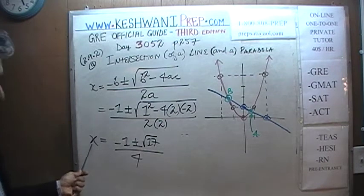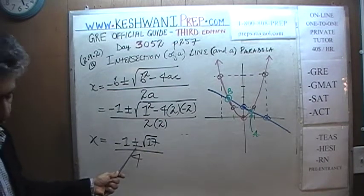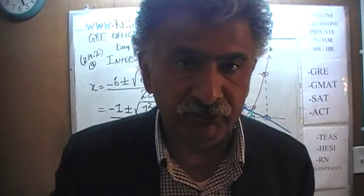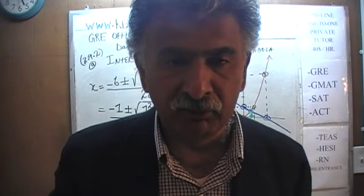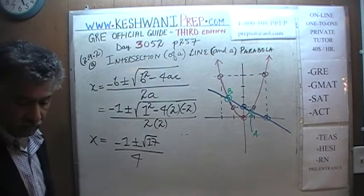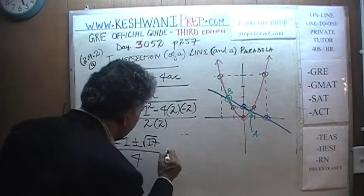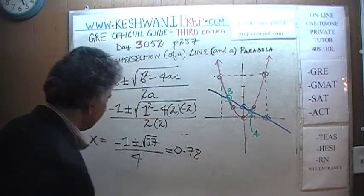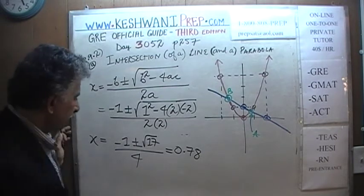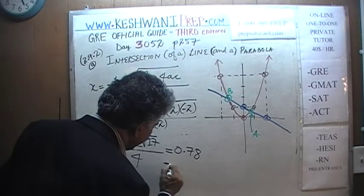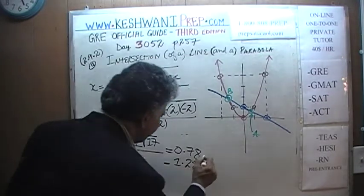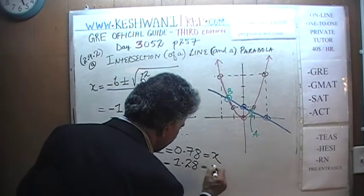At this point, there's not much we can do with it. We do not know what the square root of 17 is by heart obviously. It's not a perfect square. We're not going to waste our time trying to do it manually obviously. Pick up your calculator. You are allowed the calculator on the exam. Pick up the calculator. Figure it out. And if you do all the calculation, you will see that the positive value when you use positive 17 is going to be 0.78 and then when you use a negative square root of 17, it's going to be negative 1.28.